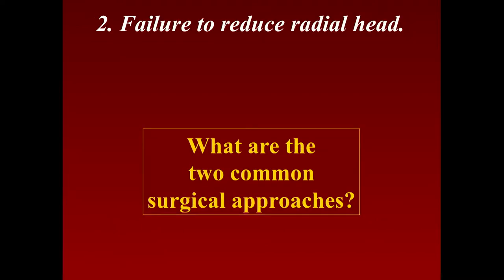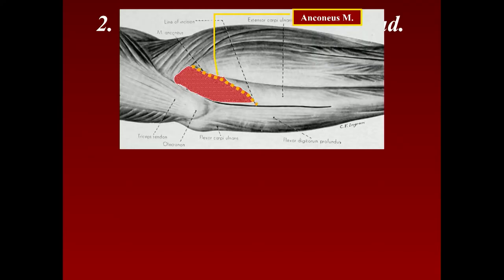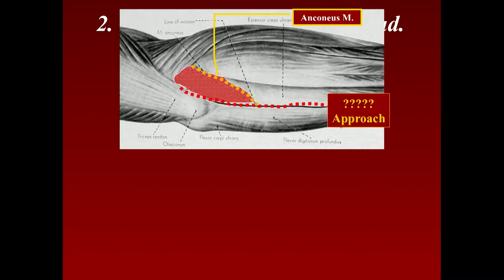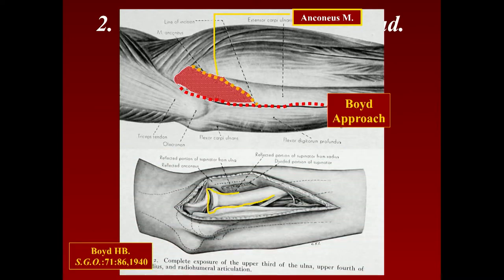The two common surgical approaches are the Kocher and the Boyd. The Kocher approach goes between the anconeus and the extensors. Or you can go a little bit more posterior — that's the Boyd approach, which is a little bit more extensive. The Kocher approach is usually enough because all you need to do is reach in and pull out that interposed ligament.